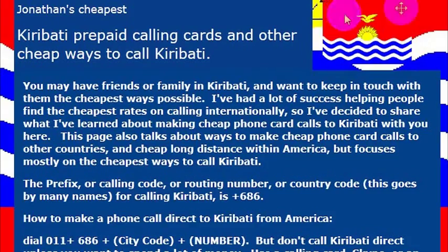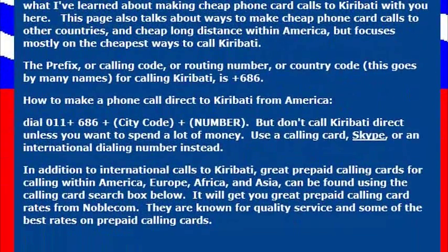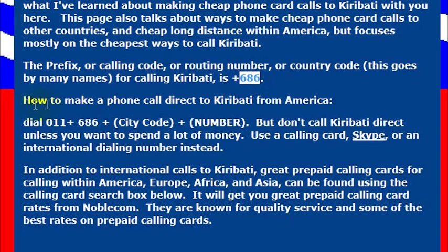When I call Kiribati, I need to know the international dialing code or the country code for Kiribati. I would like to just call my friends there, so I need to know this number: 686. That is the country code for Kiribati. So when I want to make that international phone call from the United States, I simply dial 011, which gets me the international dial code.